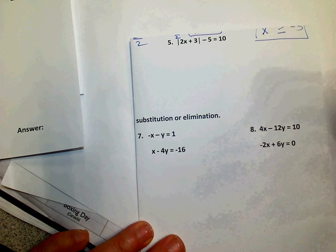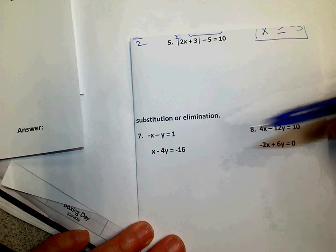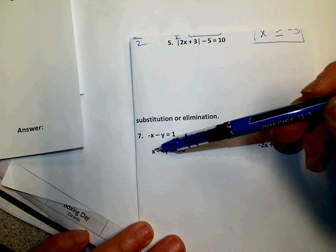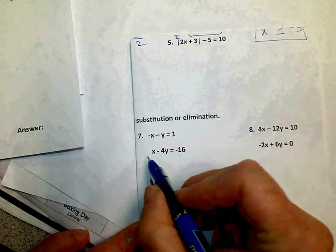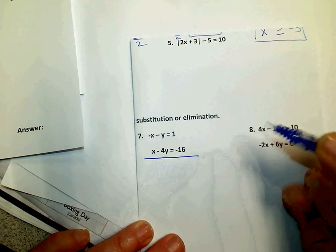But it's already set up easily to solve using elimination, because if I add the negative 1x and the 1x, they will cancel. So that's how I would work this problem.